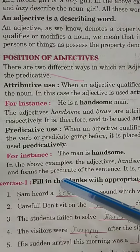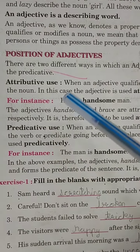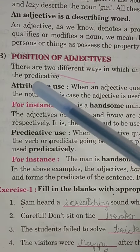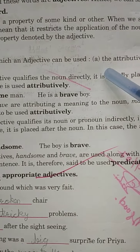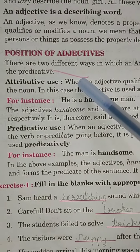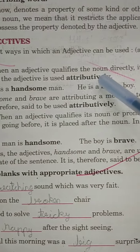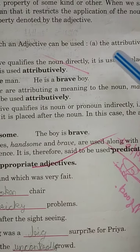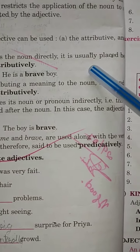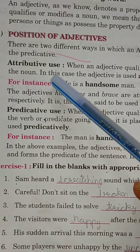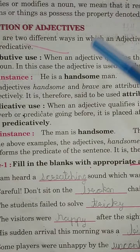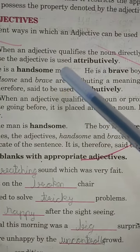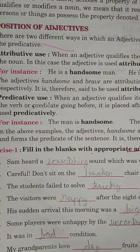Now Point B — Position of Adjectives. There are two positions: Attributive use and Predicative use. Attributive means directly use karna, predicative means indirectly use hona. There are two different ways in which an adjective can be used — the Attributive and the Predicative. Attributive use: when an adjective qualifies the noun directly, it is usually placed before the noun. For example: 'short girl' — noun 'girl' hai, aur 'short' directly pehle laga, so it is used attributively.